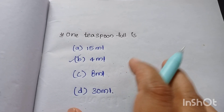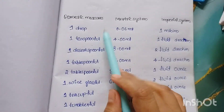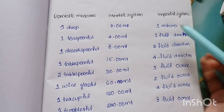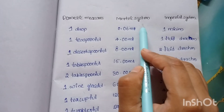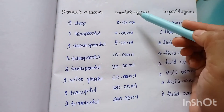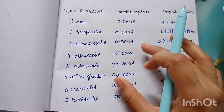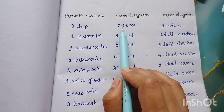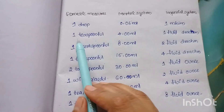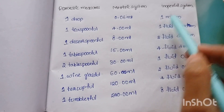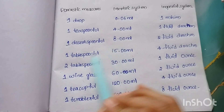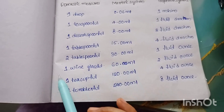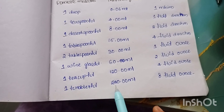These measurements — let's look at the domestic measures. This is the metric system; this is the imperial system. In the Indian Pharmacopoeia, the metric system is used. 1 drop equals 0.06 ml, 1 minim. 1 teaspoonful is 4 ml. 1 dessertspoonful is 8 ml. 1 tablespoonful is 15 ml. 2 tablespoons is 30 ml. 1 wine glassful is 60 ml. 1 teacupful is 120 ml. 1 tumbler is 240 ml.